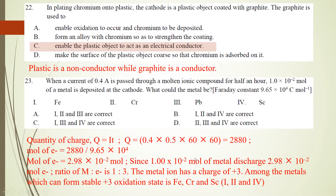Stoichiometrically, the ratio of moles of metal to electrons is 1 to 3. So the metal has a charge of +3. Which metals could have a +3 oxidation state? Iron, chromium, and scandium. Lead can only have +2 and +4 — for your information. So the best answer is options 1, 2, and 4.